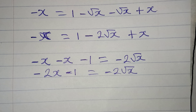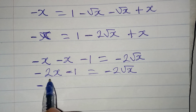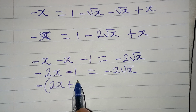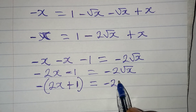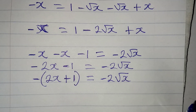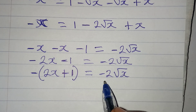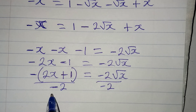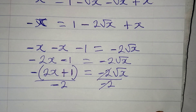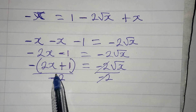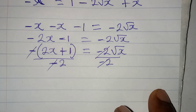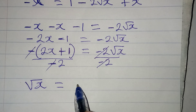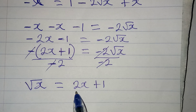Now I want to factor out the negative, so we have -(2x + 1) = -2√x. I can divide both sides by -2, so the negatives cancel, giving √x = (2x + 1) / 2.